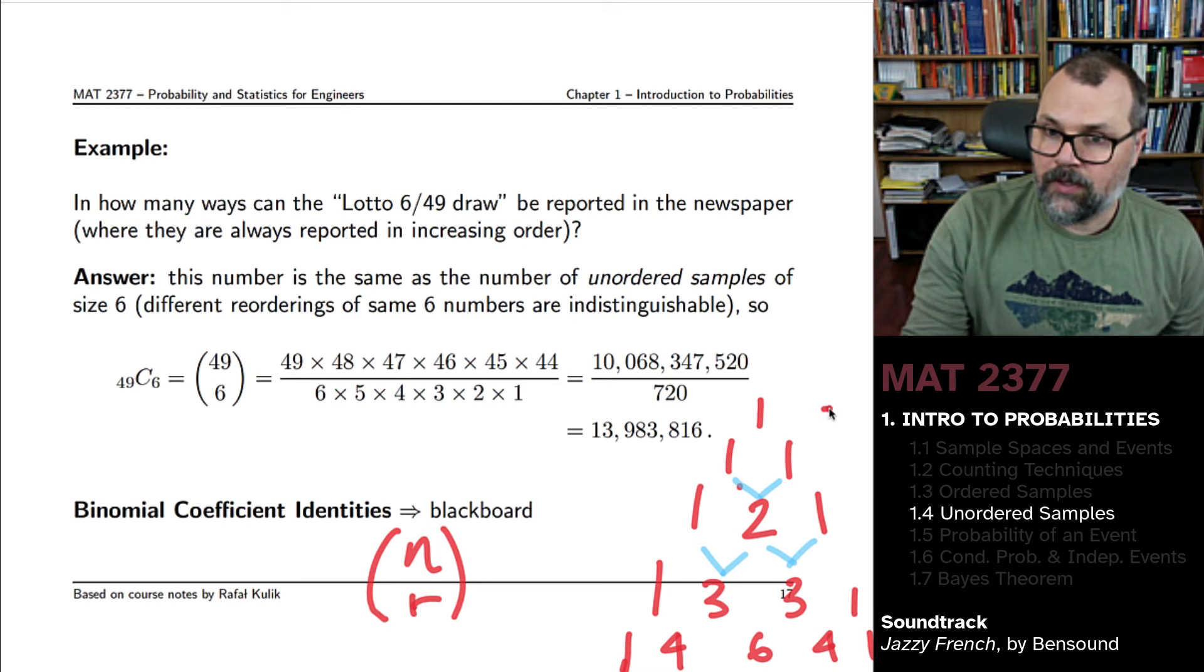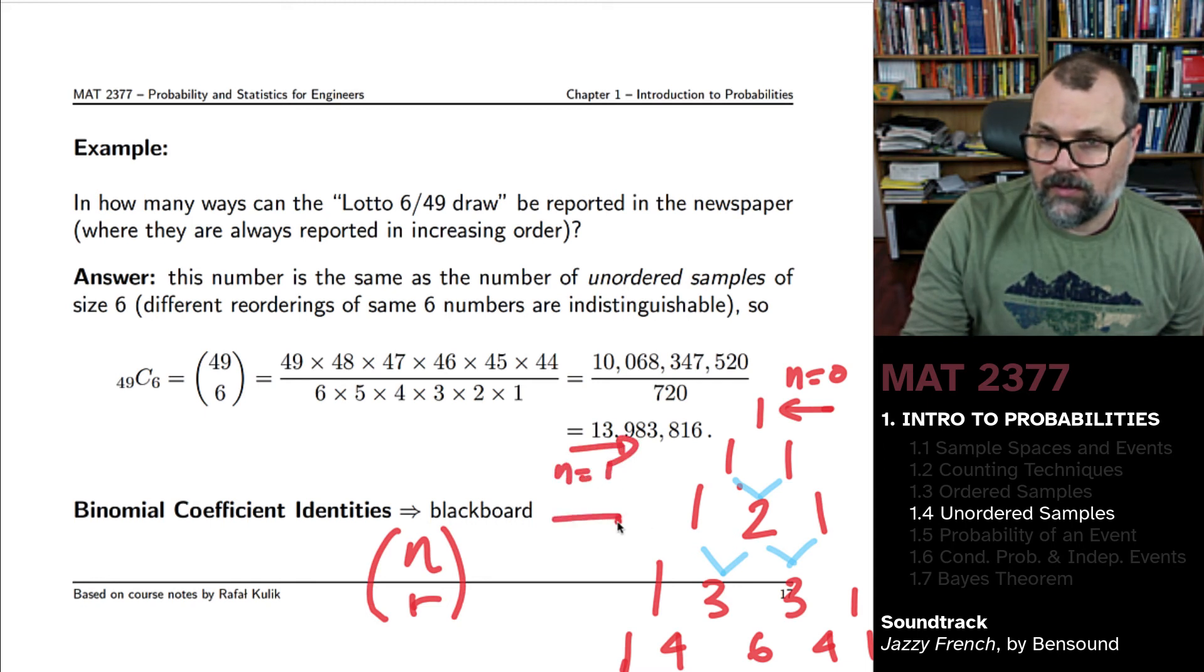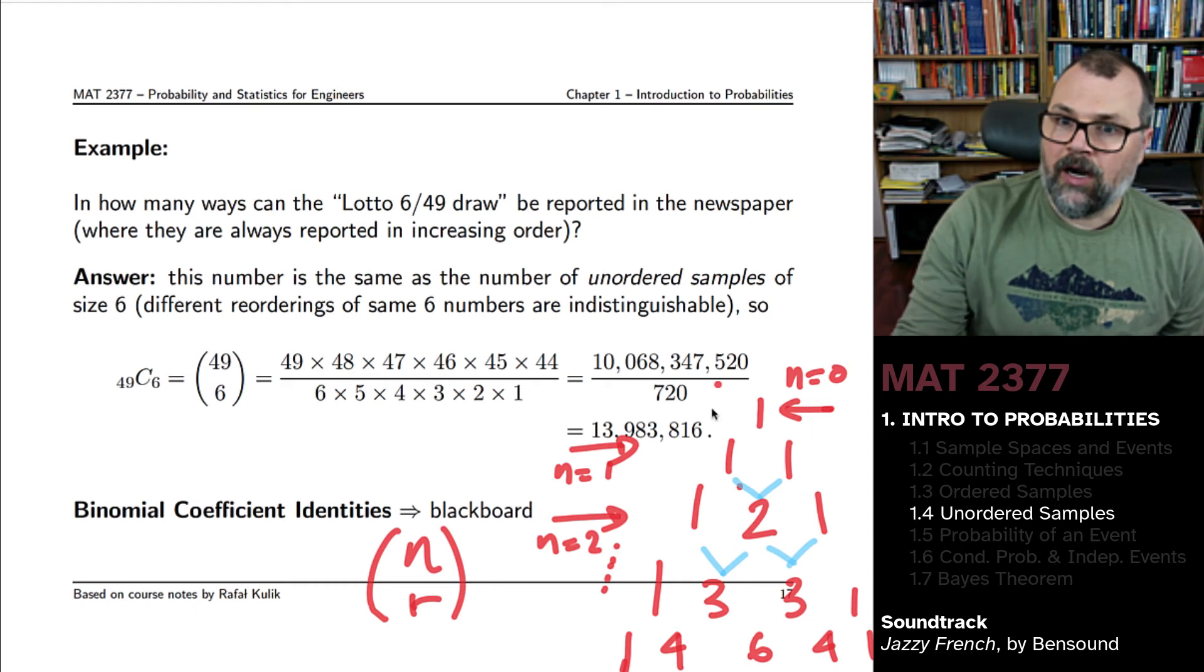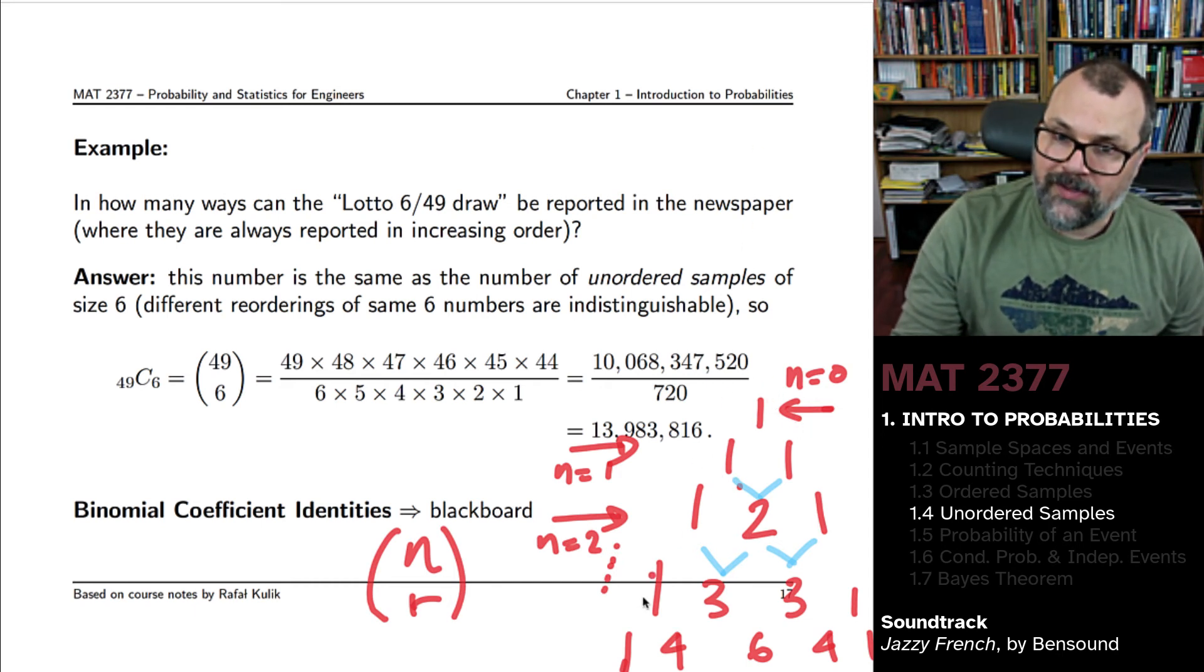This corresponds, the first row corresponds to n equals zero, the second one to n equals one, the third one to n equals two, and so forth. And the rth entry, well this corresponds to r equals zero, r equals one, r equals two, and so forth.